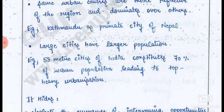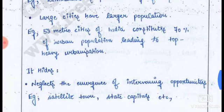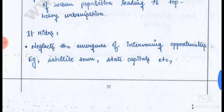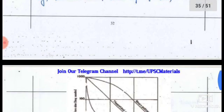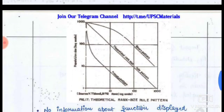The rank-size rule reveals that some urban centers are more reflective of regional dominance over others — from large cities to edge or remote cities. Large cities have larger populations; for instance, 53 metro cities of India account for 70% of the urban population, leading to a top-heavy distribution. It hides the emergence of intervening opportunities.